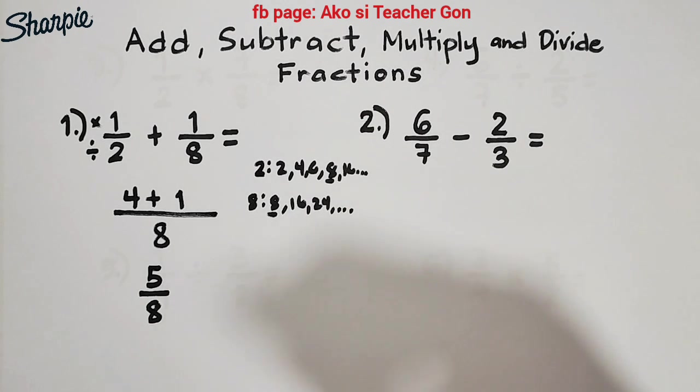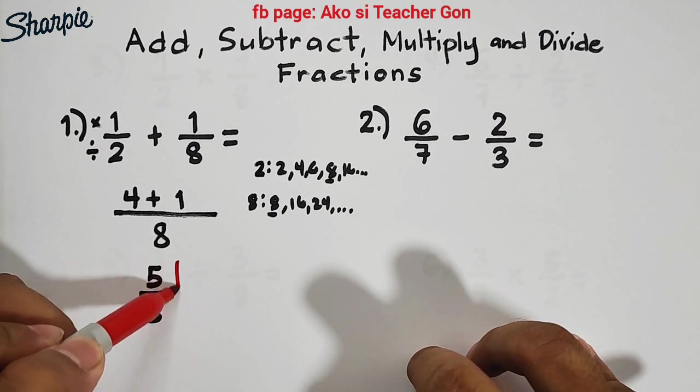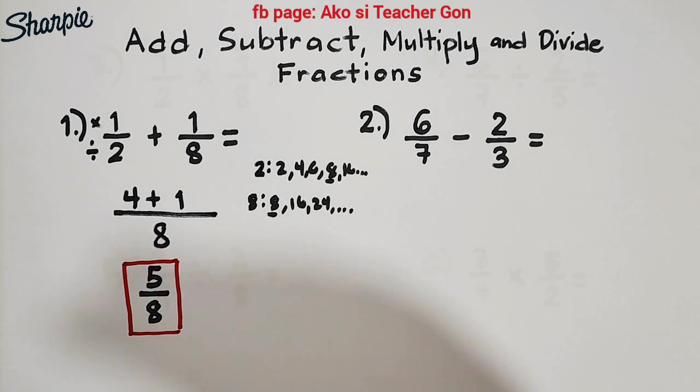The answer here is 5/8. By the way guys, before declaring that your answer is the final answer, you need to check if the given fraction is already in simplified form. How do we know if it's simplified? When there's no common factor. Therefore, this is the final answer: 5/8.